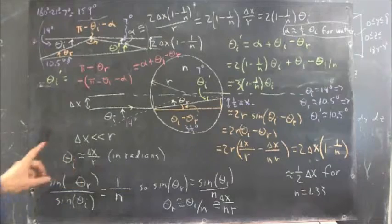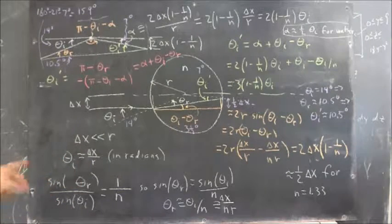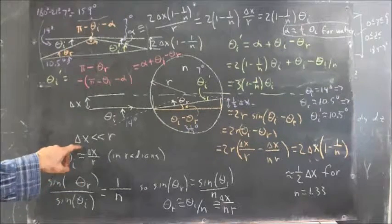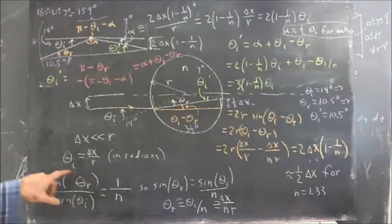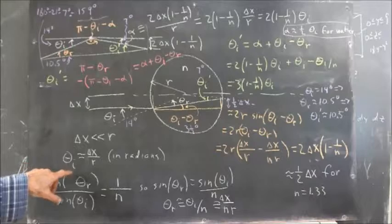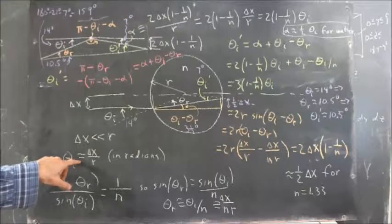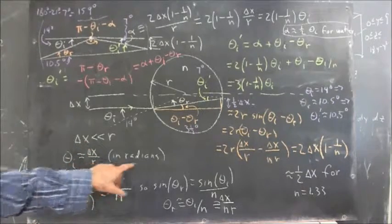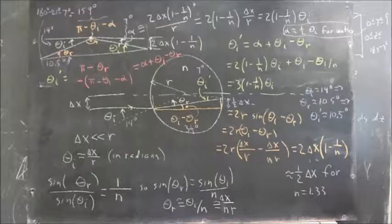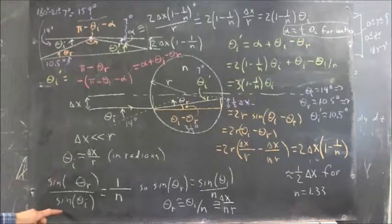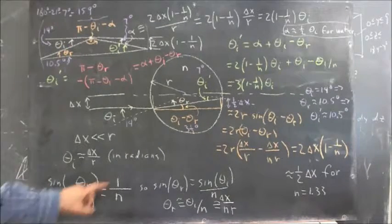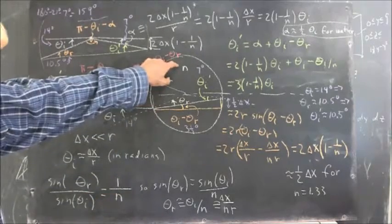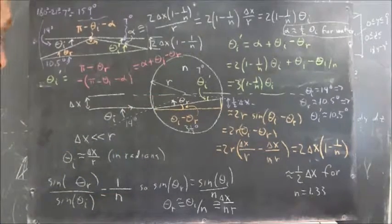For the small angle approximation, if delta x is much less than r, then theta sub i is approximately equal to delta x over r — that's the angle in radians. The sine of theta sub r over the sine of theta sub i should equal 1 over n, where n is the index of refraction.